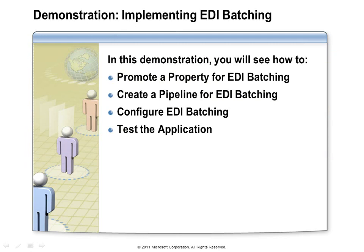In this demonstration, we'll look at promoting properties for EDI batching so we can use them within our filter expression. We'll configure the EDI batching and set up our own pipeline with a batch marker component, and then test the process to see if we can get messages coming in, being included in a batch, and then released at the appropriate trigger.